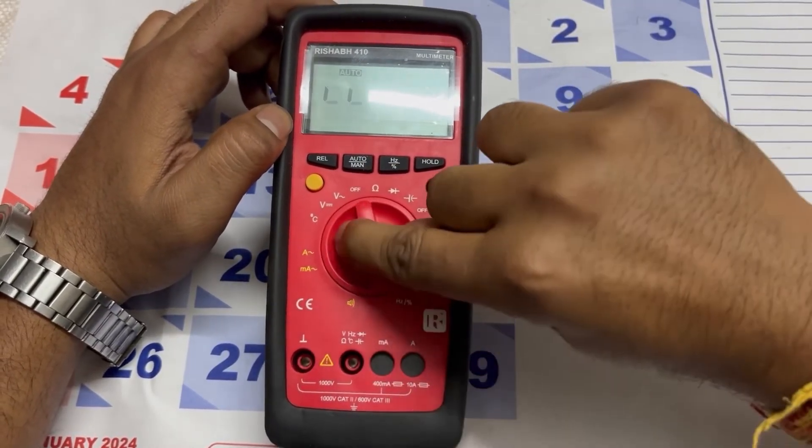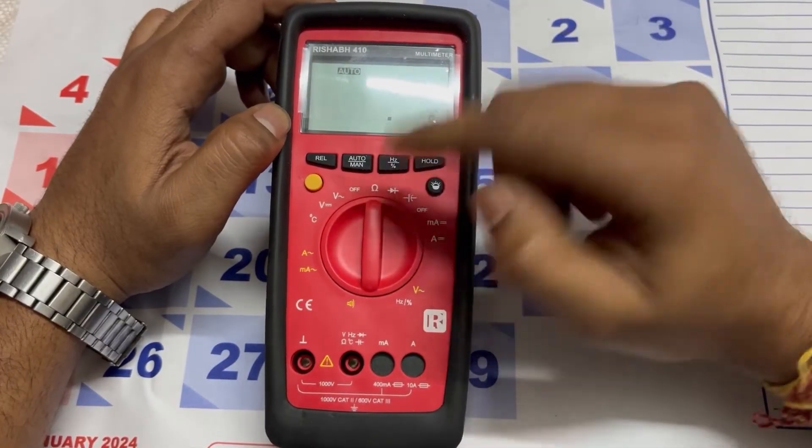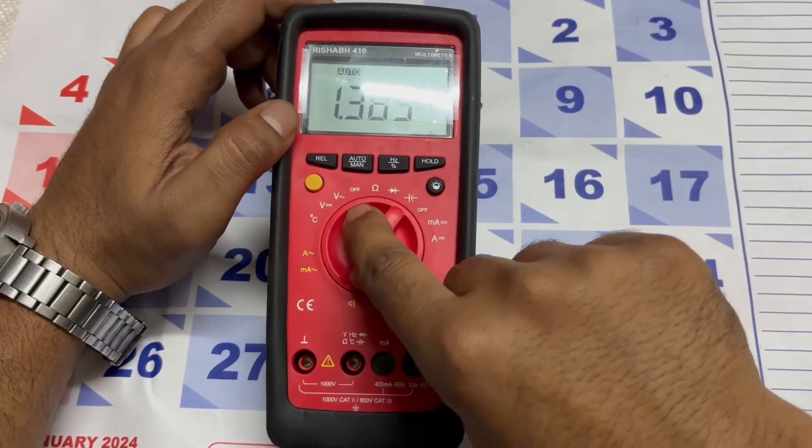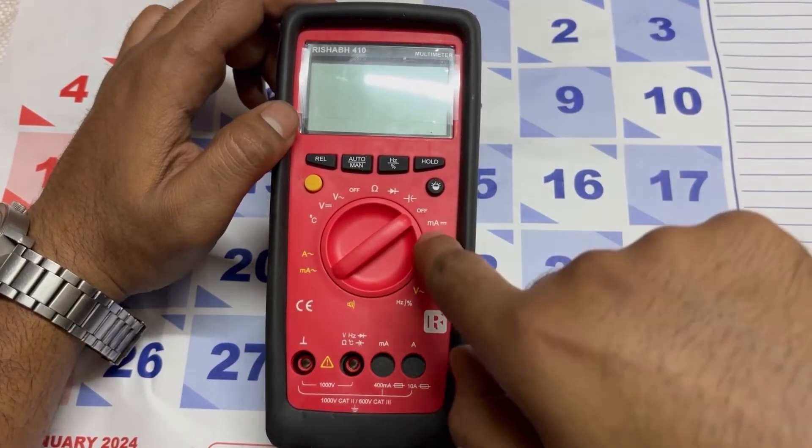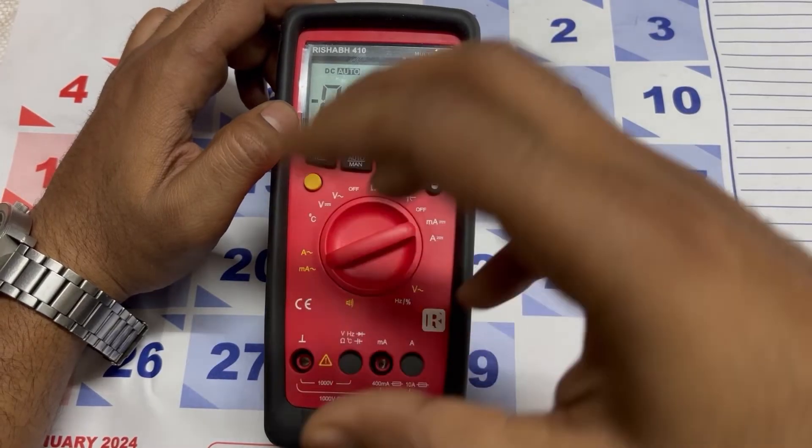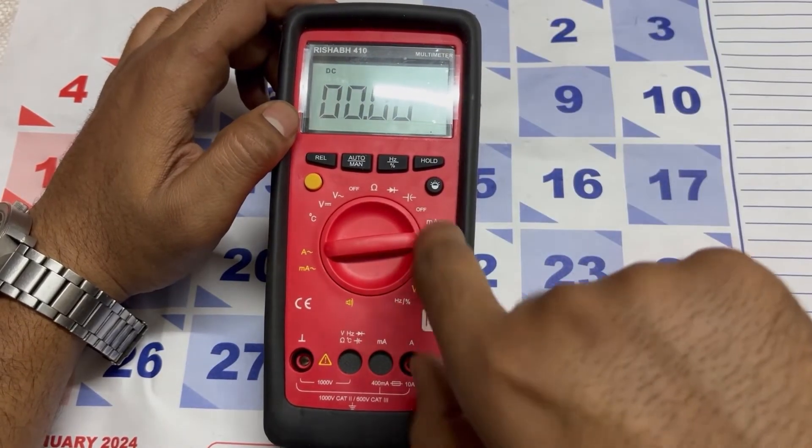This is the off switch. This is for checking your resistance. Here you can check a diode, you can check a capacitor here. This is again the off switch. You can check DC milliamps here, and you can check ampere here.